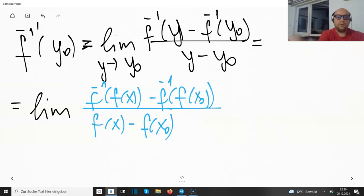So we cannot write y running towards y₀ anymore. We have to write x towards x₀. But now the function and the inverse function are cancelling each other out.